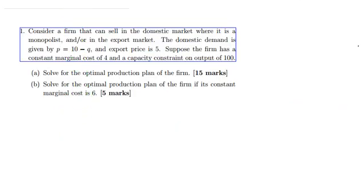Consider a firm that can sell in the domestic market where it is a monopolist, and/or in an export market. The domestic demand and the export price are given. Now suppose the firm has a marginal cost of 4 and a capacity constraint of 100. We need to solve for the optimal production plan of the firm.